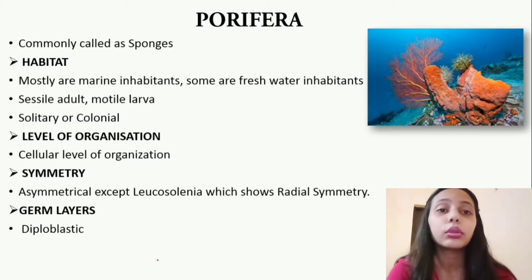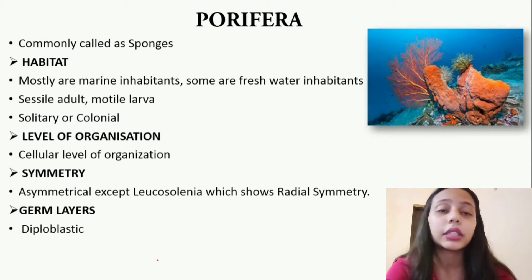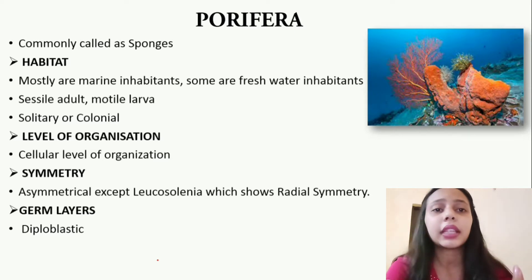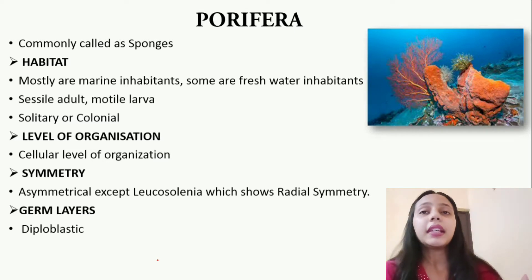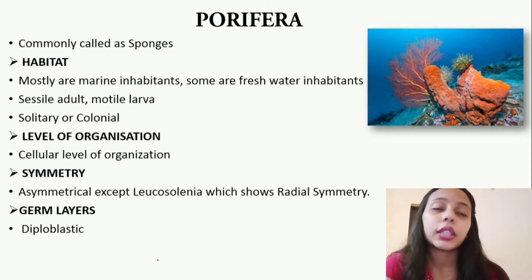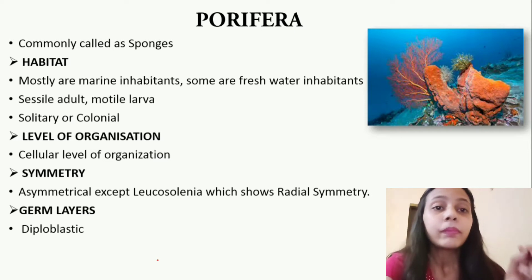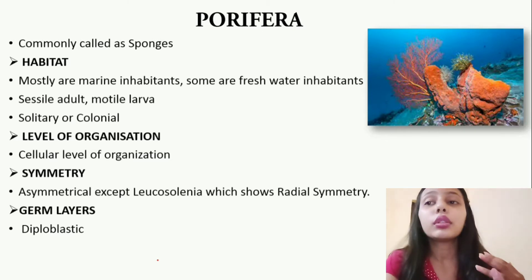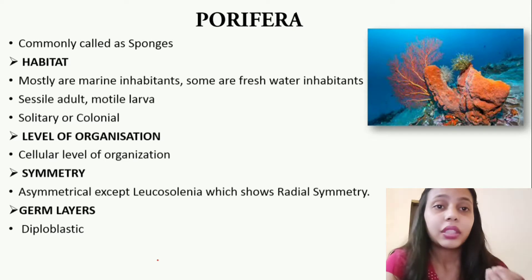Except Spongilla जो कि freshwater में देखने को मिलता है। इनका जो adult form है वो sessile होता है — यानि कि substratum से जुड़ा रहता है। लेकिन इनका जो larval form है वो motile होता है, यानि कि वो active होता है। ये solitary भी हो सकते हैं, ये colony में भी रह सकते हैं। इनके level of organization की बात करें जो हमने पिछले video में पढ़ा था — इनमें cellular level of organization है। यानि कि हर cell का अपना specific function है, हर cell अपने आप में independent है बाकियों से।